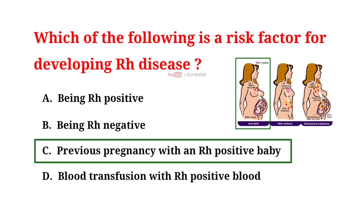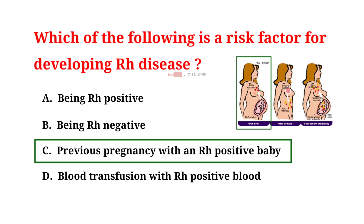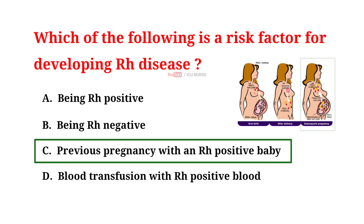Having an Rh positive baby in a previous delivery increases the risk of Rh disease in subsequent pregnancies. This is because the mother's immune system may have been sensitized to the Rh factor protein during the first pregnancy, and may produce antibodies against it that can cross the placenta and attack the RBCs of a subsequent Rh positive fetus.